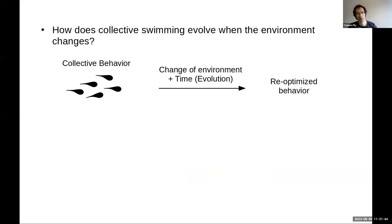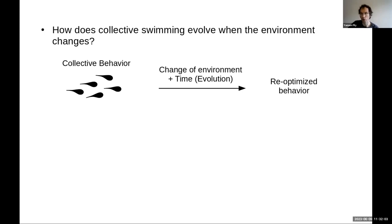The bigger question here is: how does collective swimming evolve when the environment changes? You can imagine a group of fish in a certain environment where their collective behavior is optimized for that environment. Then that environment changes — maybe they colonize a new location with different conditions, or the conditions in their current place change. Either way, given enough time, you expect evolution to re-optimize their behavior for the new environmental conditions.